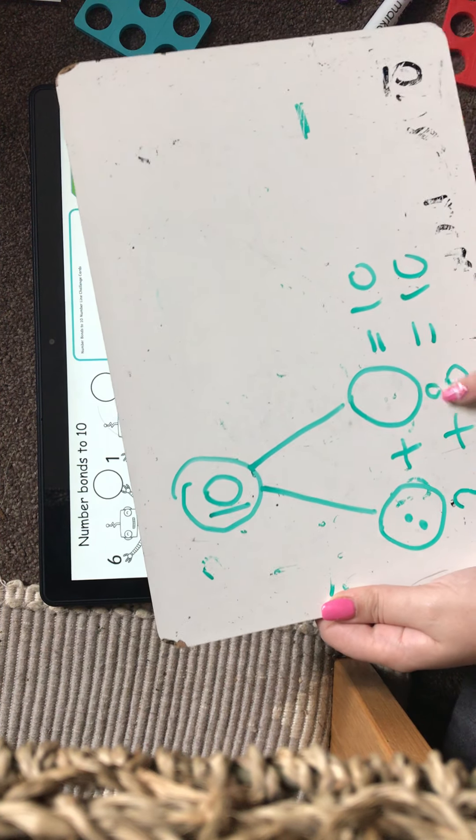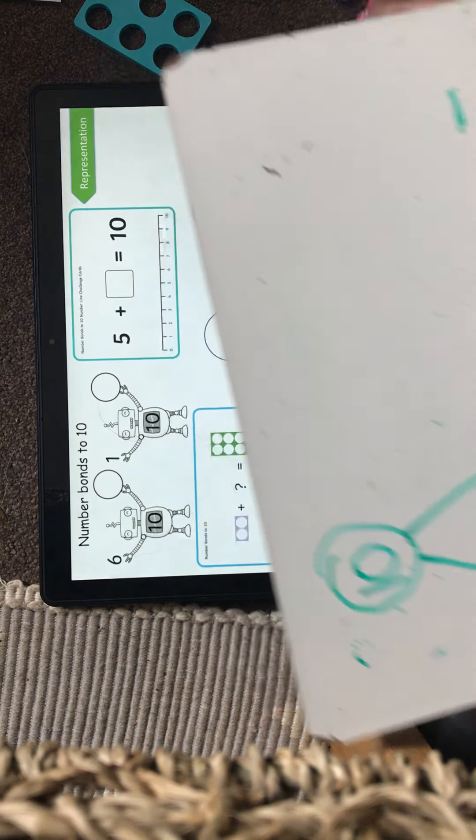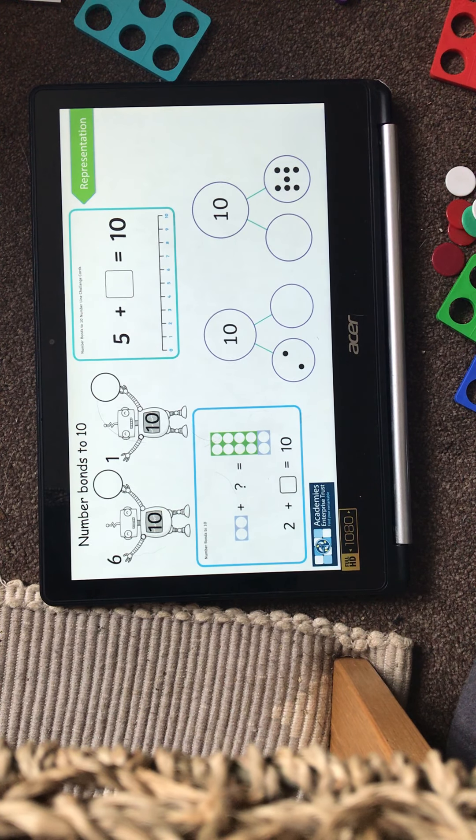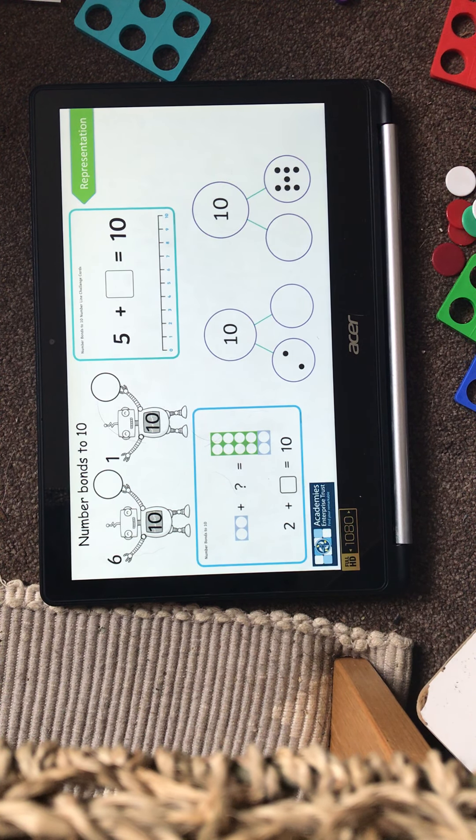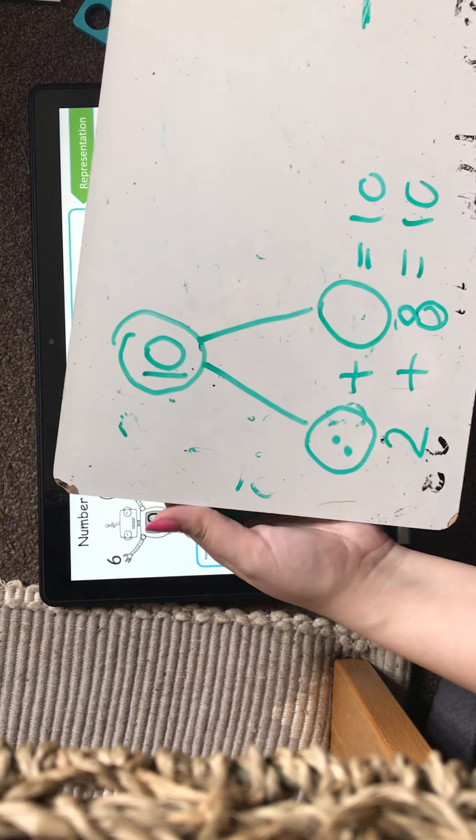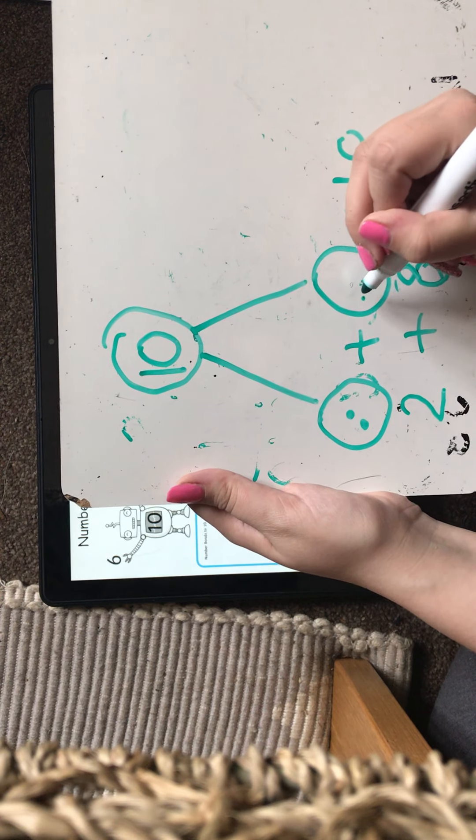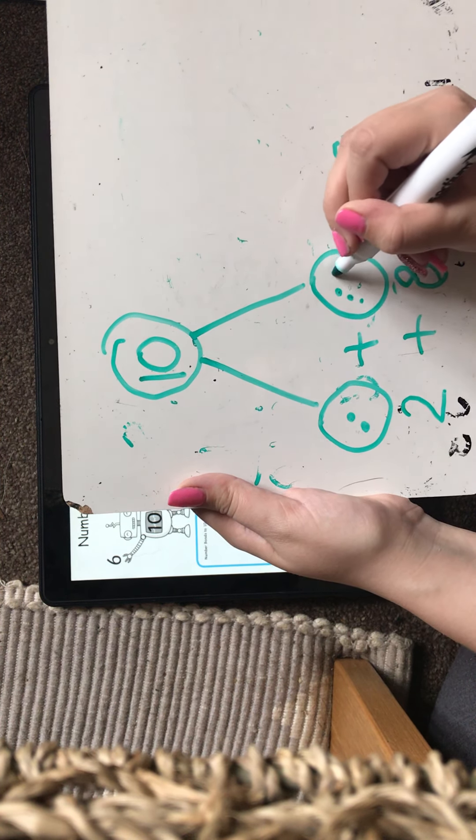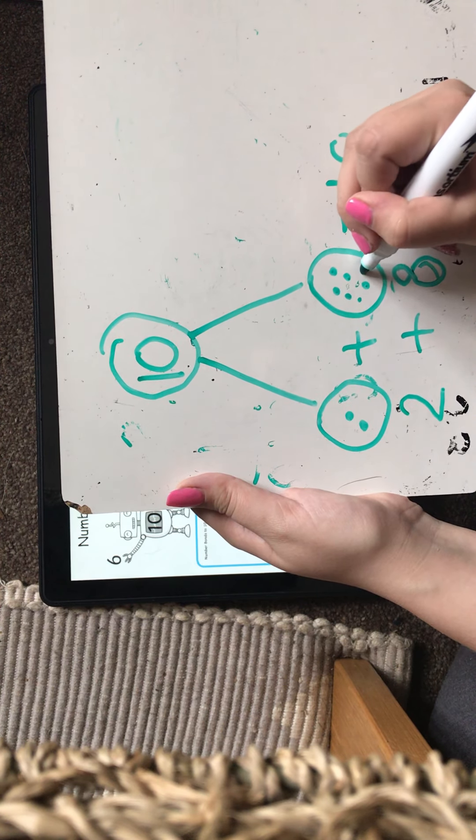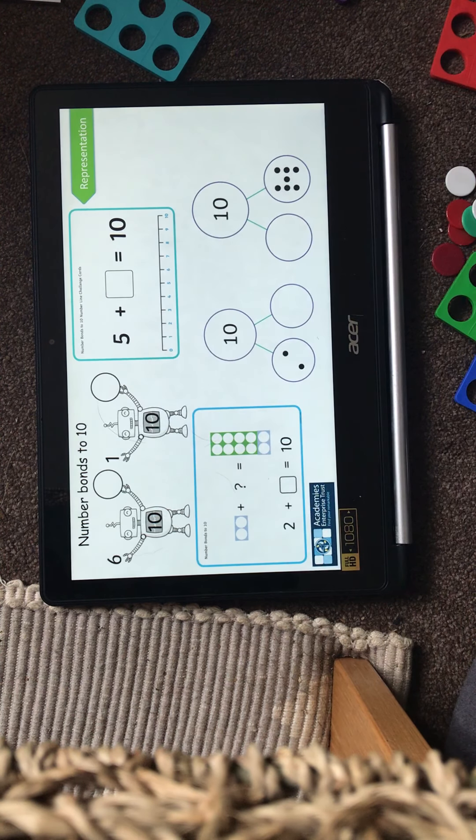So I can write it as a number which looks like this. It's my 8. Don't confuse it with your 6. It's 2 circles on top of each other. 8. And I can draw 8 little dots. 1, 2, 3, 4, 5, 6, 7, 8. And that equals 10.